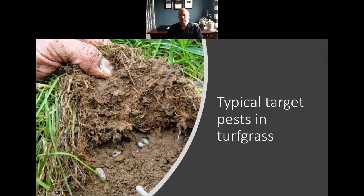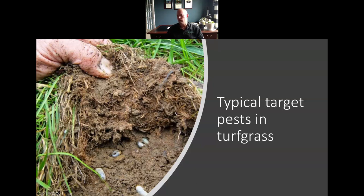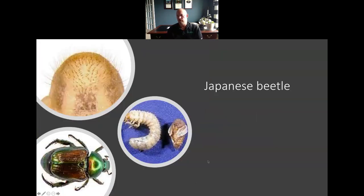When it comes to ornamental turf for residential and commercial situations, it becomes a real problem both for trying to rotate chemistries and the cost of trying to be cost effective. This is one area where, honestly, if we were lacking in products and technologies, this is probably the toughest for us. So let's look at some typical target pests in turfgrass — the down and dirty insect pests you're probably going to see up here in Northeast Ohio.